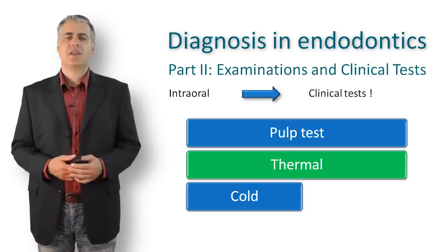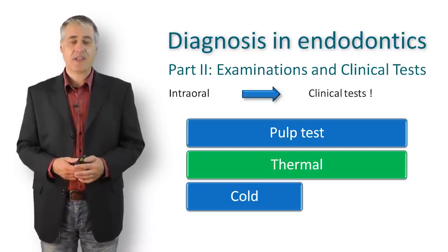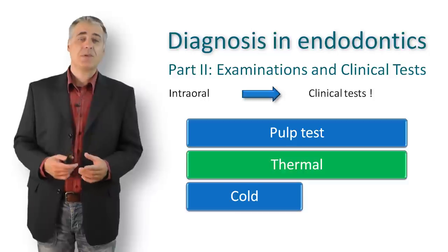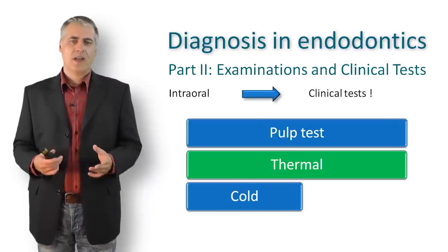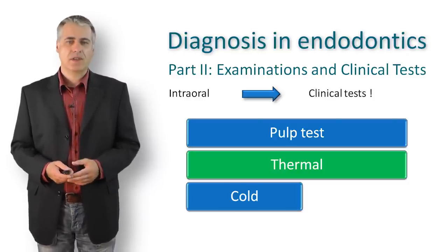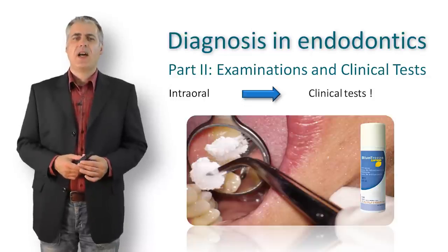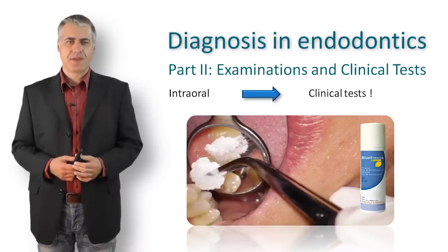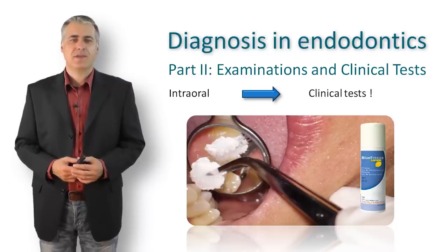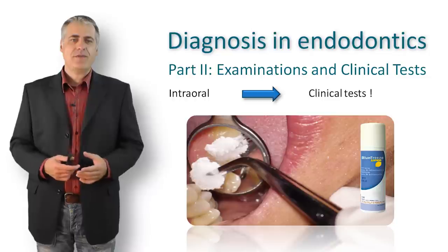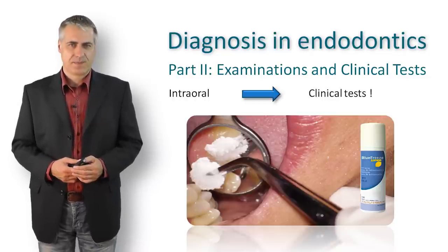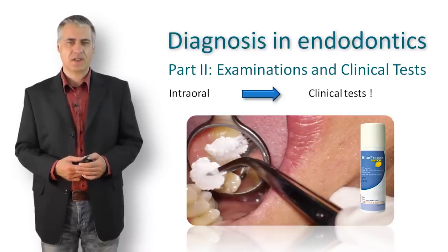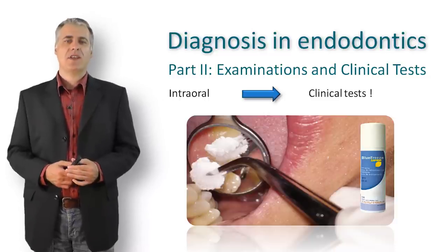You should always keep in mind the limitations of this test. For example, on a multi-rooted upper first molar with a positive result, it is possible that nerve tissue is vital in the palatal root while tissue in the buccal roots is already necrotic. To perform the test, I use a cotton pellet with a carbon dioxide spray. The contralateral and adjacent teeth should be tested first to establish a baseline; you may need to repeat the test several times. Isolating adjacent teeth with rubber dam or plastic strips is useful to prevent false results when metal crowns or extended amalgam fillings are present.